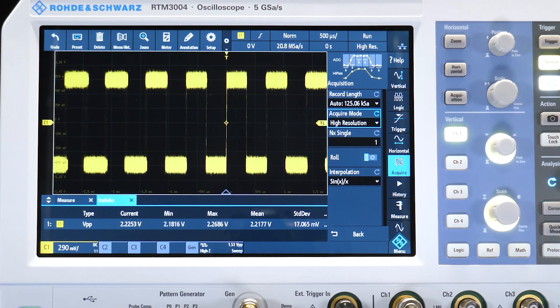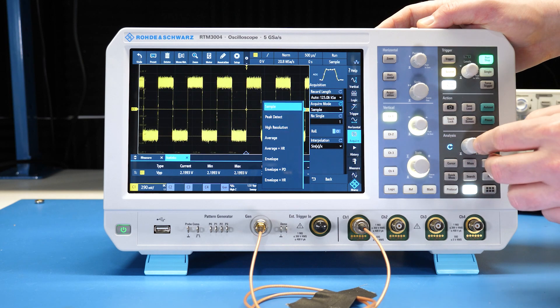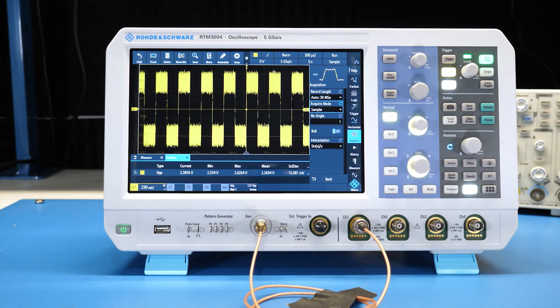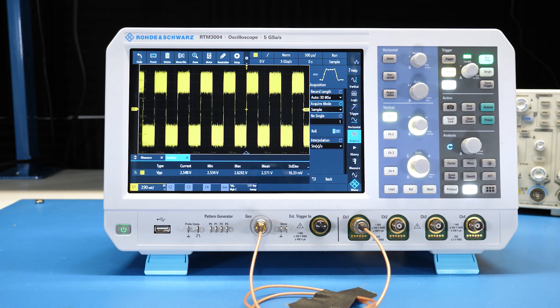But you might say, hey, this looks just like sample mode. Well, watch what happens to the noise when we switch to that mode. High resolution drops the effective sample rate, but it can handle that periodic change and reduces the random noise a little bit.